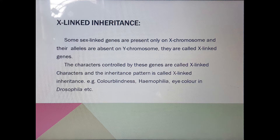These genes should only be present on the X chromosome and their allelic form should definitely be absent from the Y chromosome — that is called X linked inheritance. If the gene is also present on the Y chromosome, it would be XY linked. The characters controlled by these genes are called X linked characters. Examples include color blindness, hemophilia, eye color, and Drosophila-related traits.